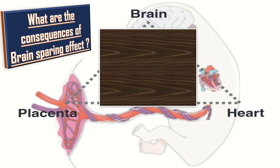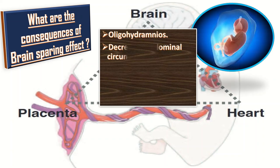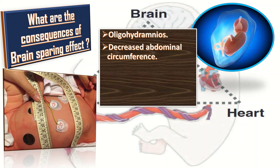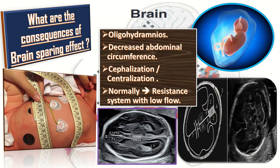What are the consequences of brain sparing effect? Decreased perfusion of the kidney results in oligohydramnios. Decreased blood flow to the liver results in decreased abdominal circumference. Brain sparing effect, also called cephalization or centralization, can be identified on MCA Doppler. Normally it is a high resistance system with low flow, but in the brain sparing effect it becomes a low resistance system with high flow.